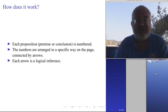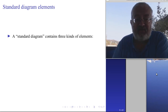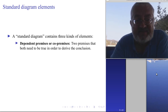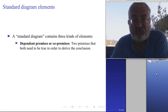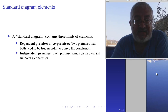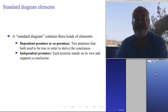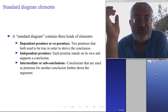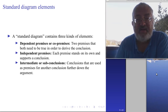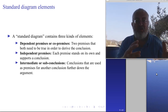Each arrow is a logical inference — it points from the premises towards the conclusion. A standard diagram has three kinds of elements. First, dependent premises or co-premises: two premises that both need to be true in order to derive a conclusion — this is a logical AND between the premises. Second, independent premises: each premise stands on its own and supports a conclusion, which is a logical OR between the premises — each premise alone can lead to a conclusion. Third, intermediate or sub-conclusions: conclusions that are used as premises for another conclusion further down the argument. With these three elements, you can construct your argument with AND, OR, and sub-conclusions.